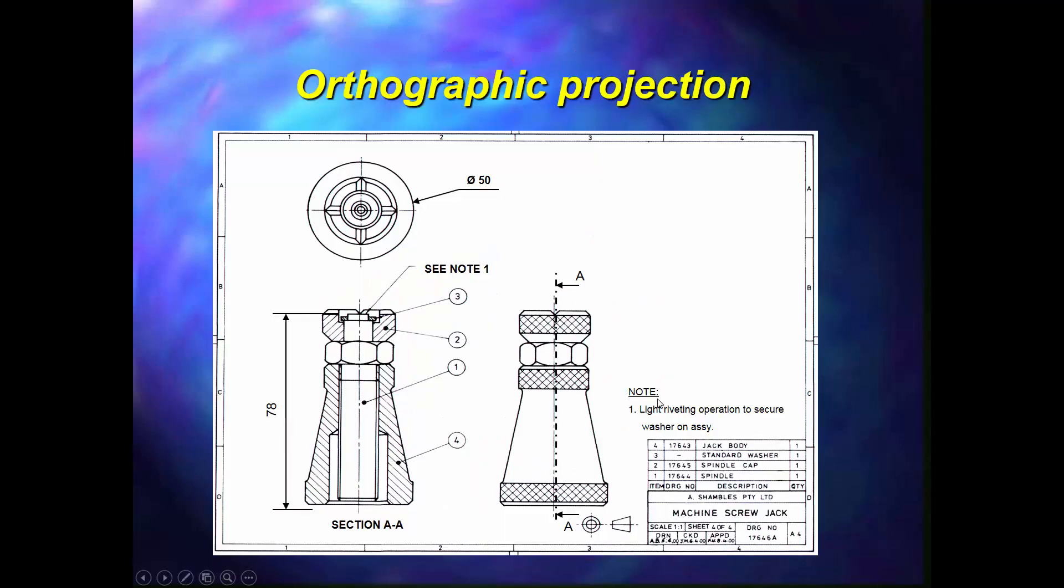If you look at this drawing, which is the view we just had there, which is showing a machine screw jack, we've got the base item 4 which is fully hatched. Remember, nuts and bolts and fasteners we do not hatch at all. We never show any section; we always show it as a full view.